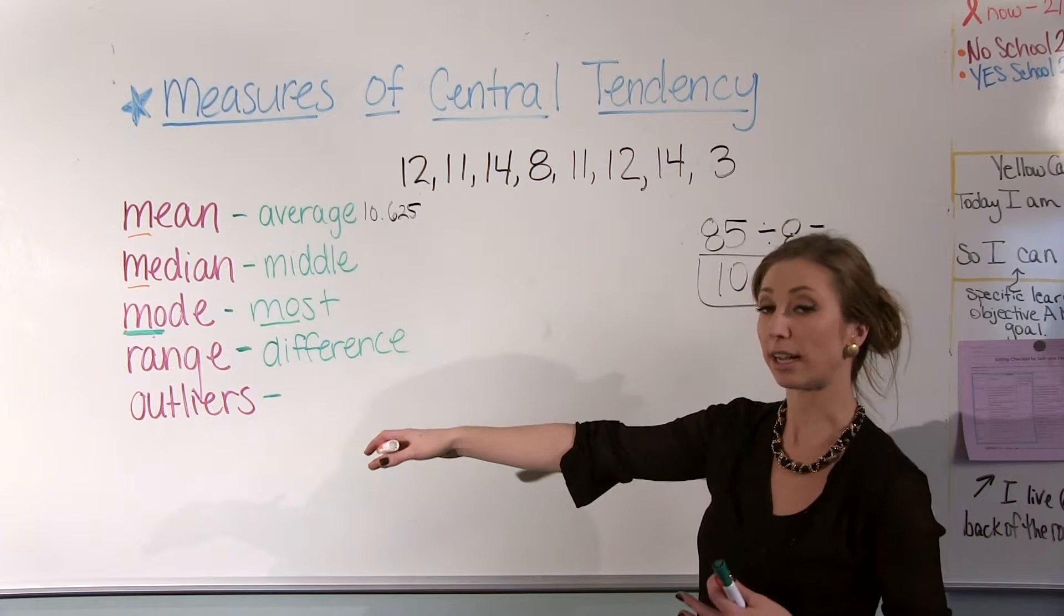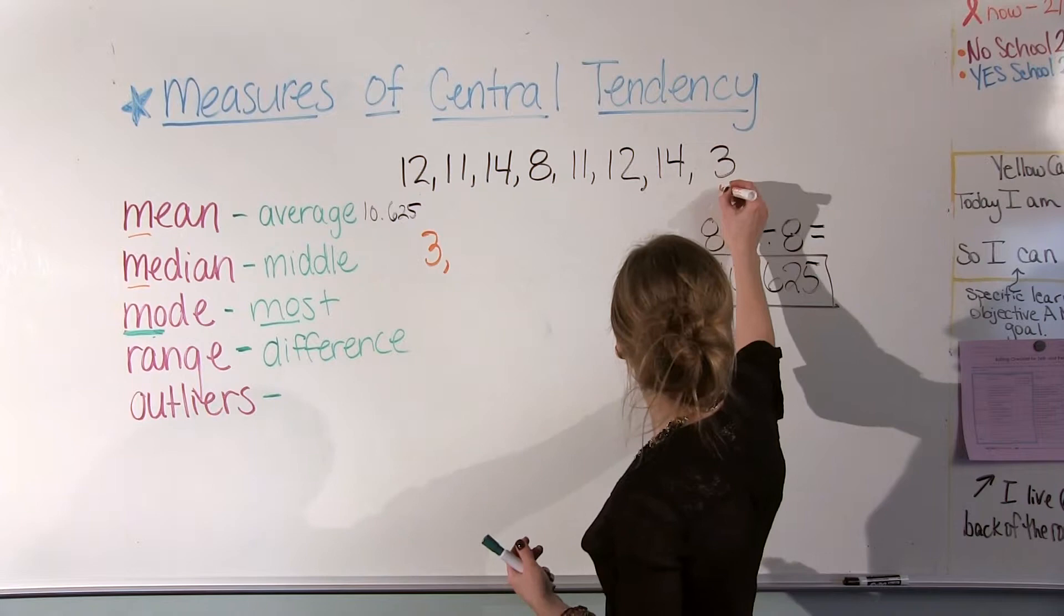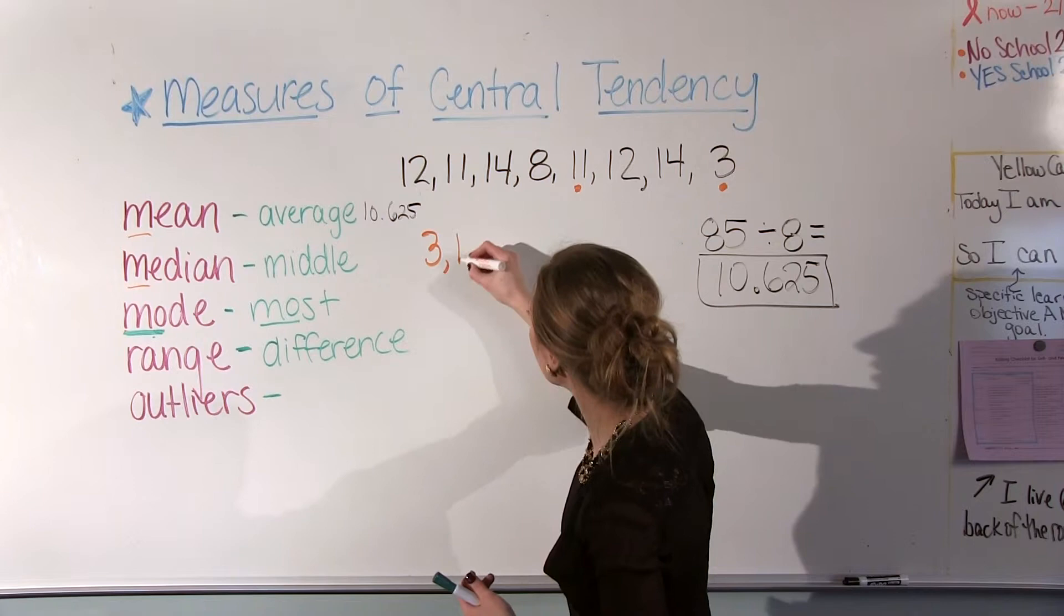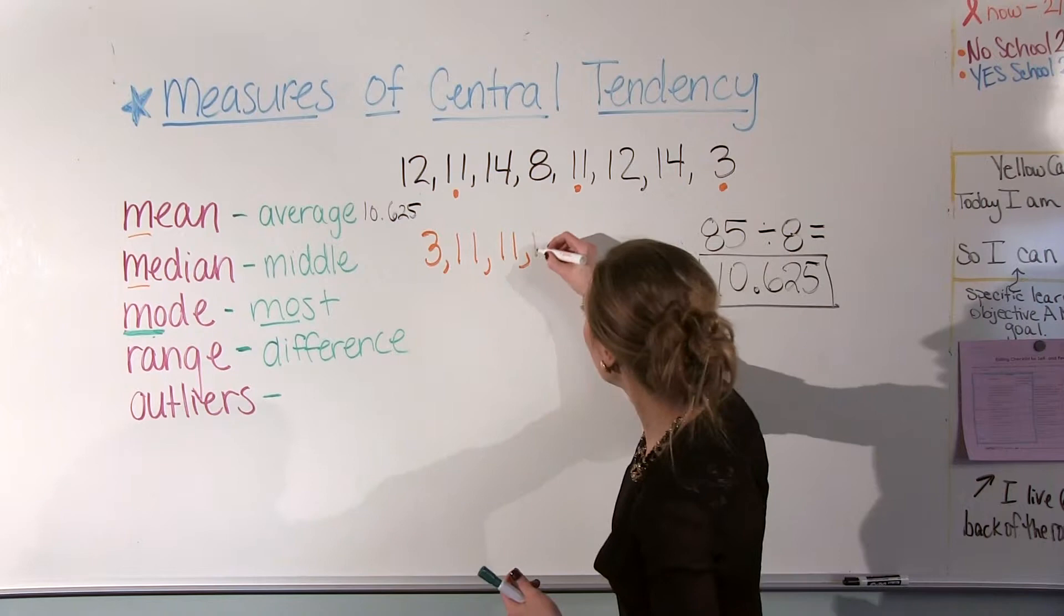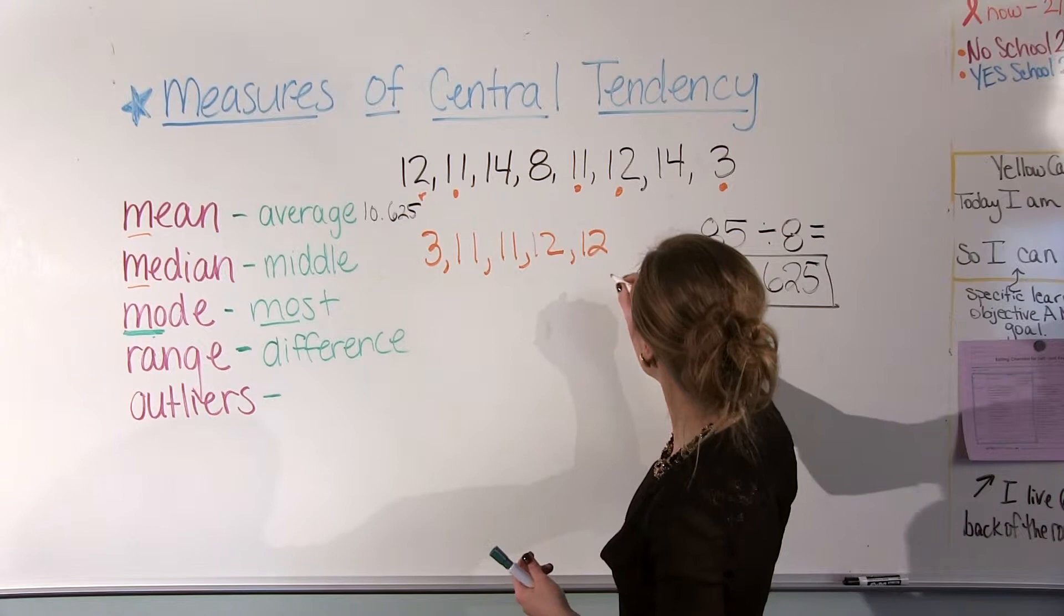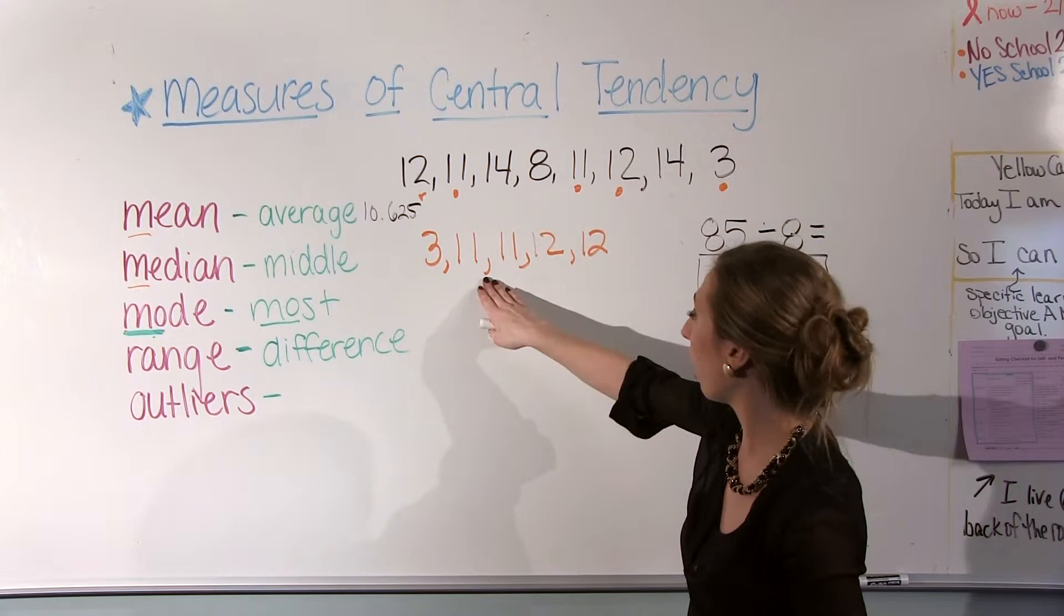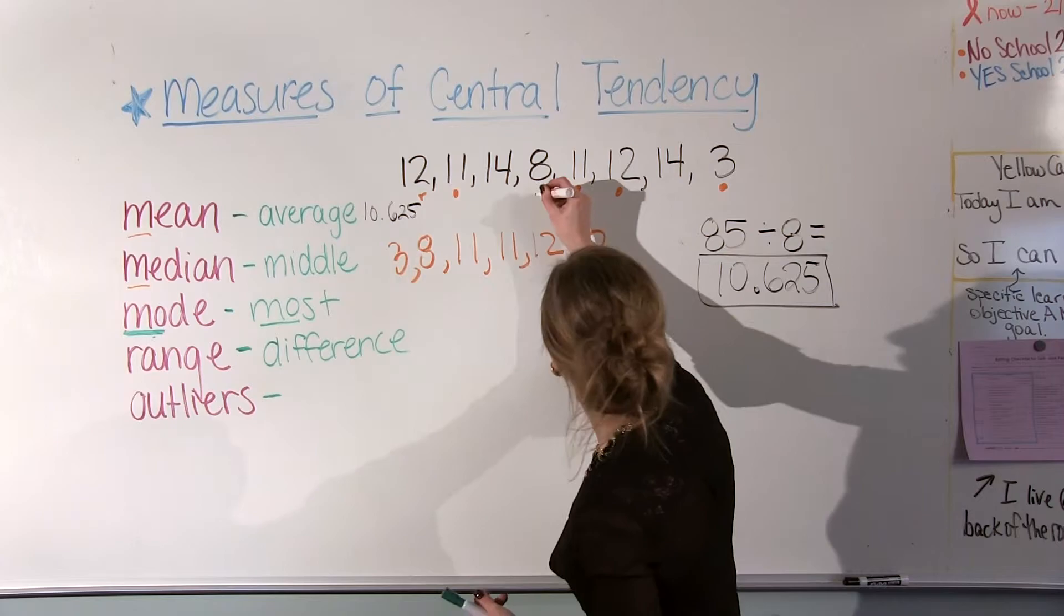So I'm going to go ahead and put this data in order, and you'll notice that I'm going to be marking off the numbers as I write them. And the reason I'm doing that is so that I know which numbers I've already written and which ones I haven't gotten to yet. And that also helps me make sure that I haven't missed anything. And as you can see, look, I missed the eight. This really helps with that; it helps with making sure that you don't miss anything.